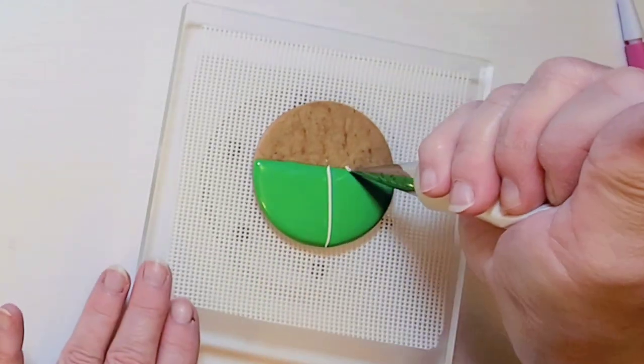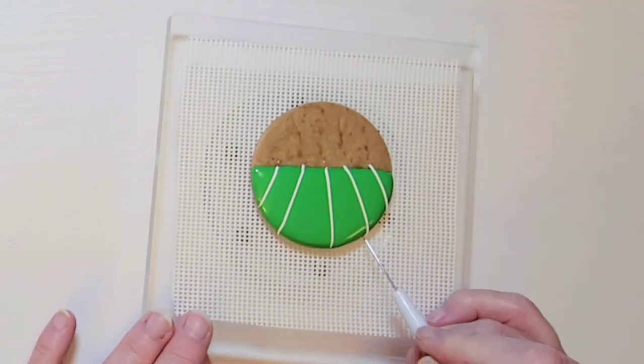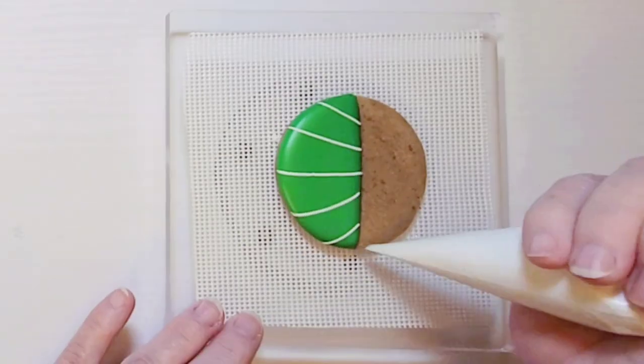Using white royal icing, let's make the lines for the field. Let this dry for about 20 minutes while you work on other cookies.